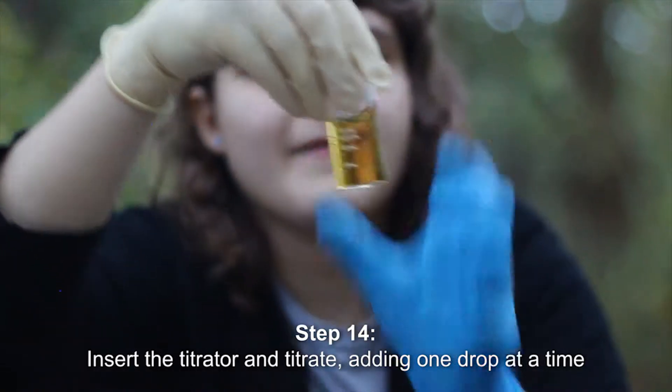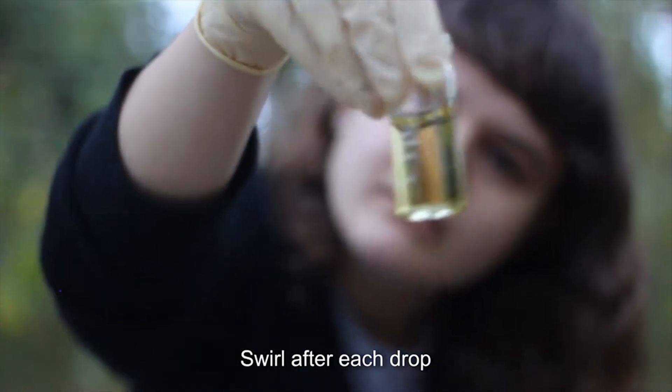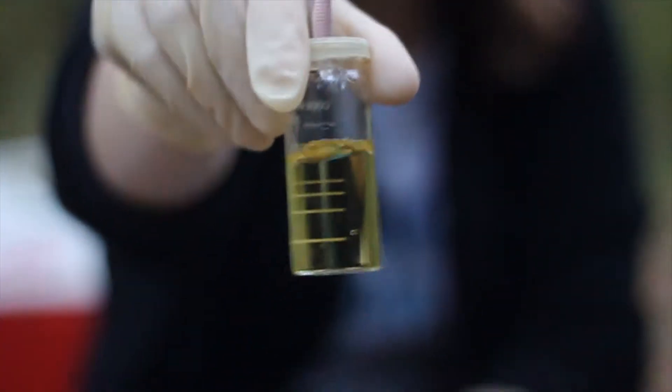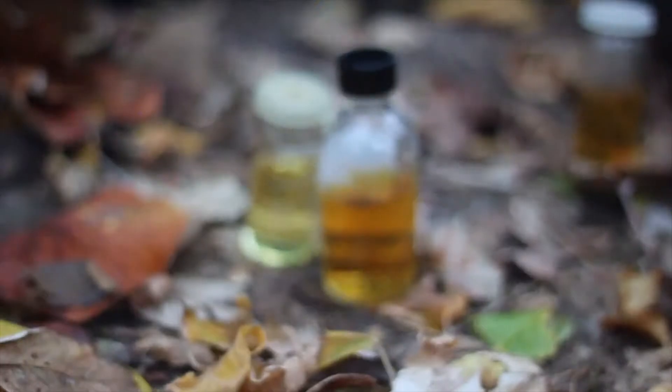Insert your titrator and titrate, adding one drop at a time and swirling after each drop. At this point, your sample should turn from a dark yellow to a lighter straw color.